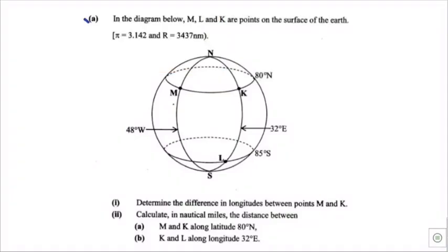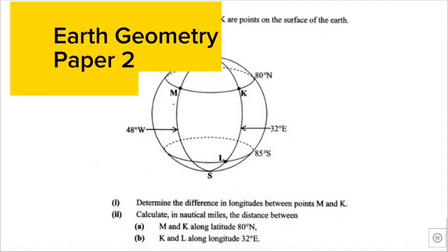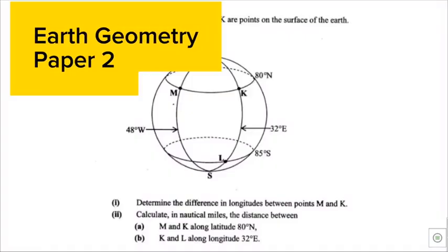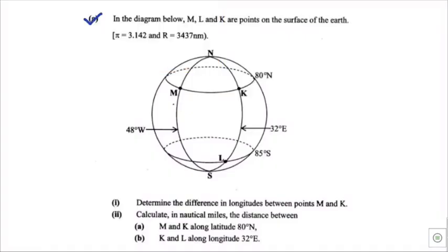I've got a question coming from Earth Geometry. The question reads: in the diagram below, M, L, and K are points on the surface of the Earth. Take pi to be 3.142 and the radius of the Earth to be 3437 nautical miles.